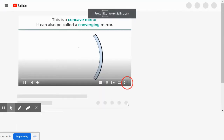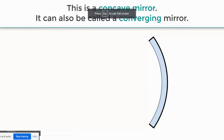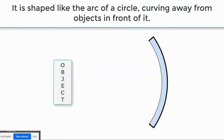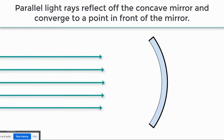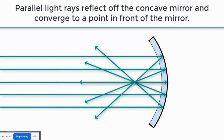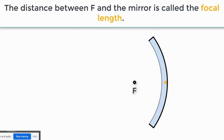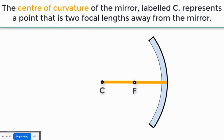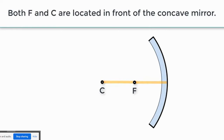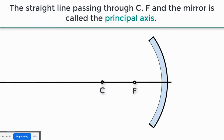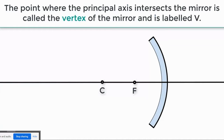This is a concave mirror, also called a converging mirror. It is shaped like the arc of a circle curving away from objects in front of it. Parallel light rays reflect off the concave mirror and converge to a point in front of the mirror. Where these light rays focus is called the focal point, labeled F. The distance between F and the mirror is called the focal length. The center of curvature, labeled C, represents a point that is two focal lengths away from the mirror. Both F and C are located in front of the concave mirror. The straight line passing through C, F, and the mirror is called the principal axis. The point where the principal axis intersects the mirror is called the vertex, labeled V.